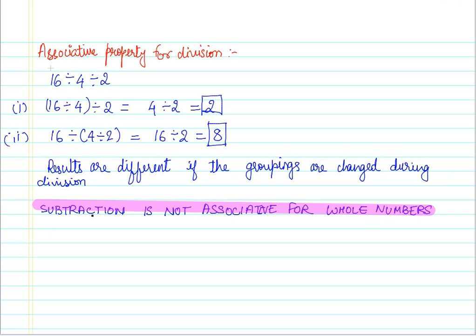Now what does this tell you? Why is this result important? This result is important because it tells us that we must be very careful when we are grouping the numbers. When we change the groupings, the results that we get are different, hence we should be careful in the grouping.